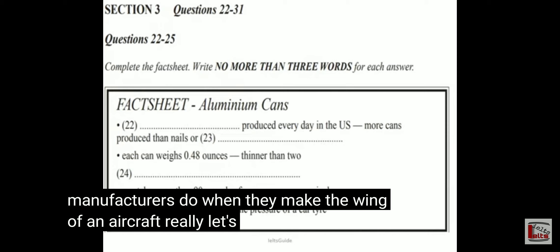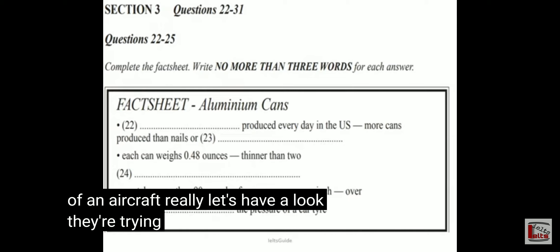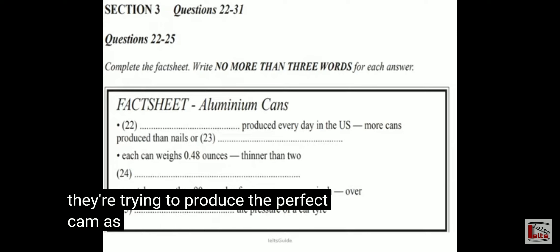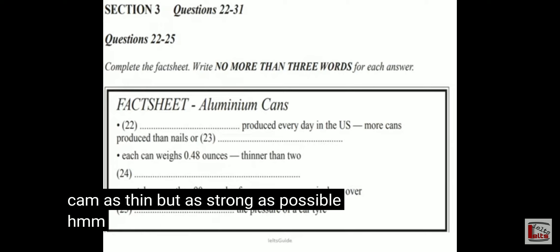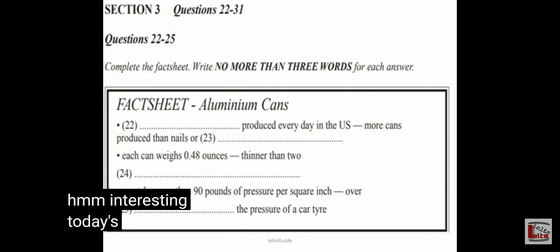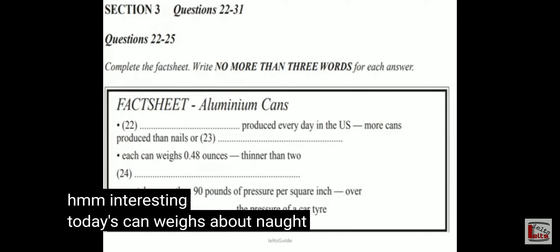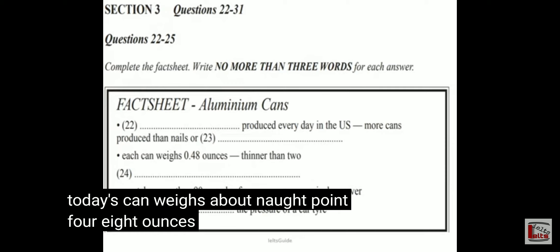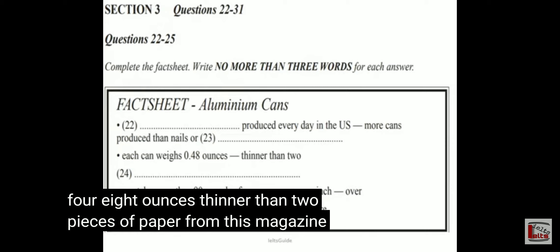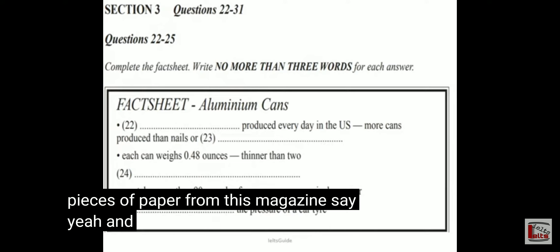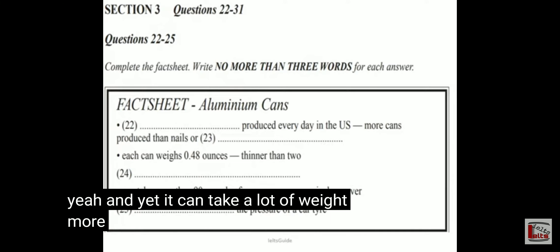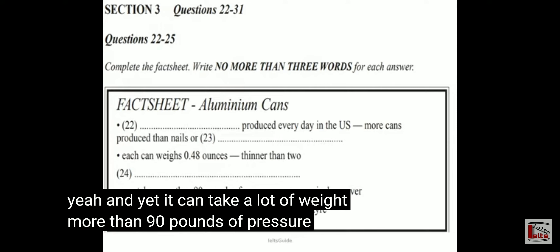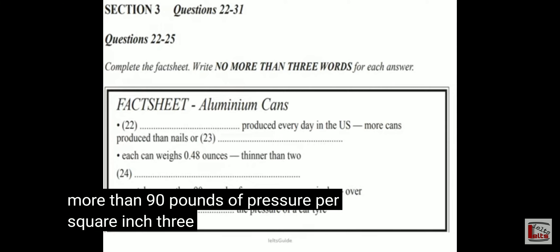Really? They're trying to produce the perfect can — as thin but as strong as possible. Today's can weighs about 0.48 ounces, thinner than two pieces of paper. And yet it can take more than 90 pounds of pressure per square inch — three times the pressure of a car tyre.